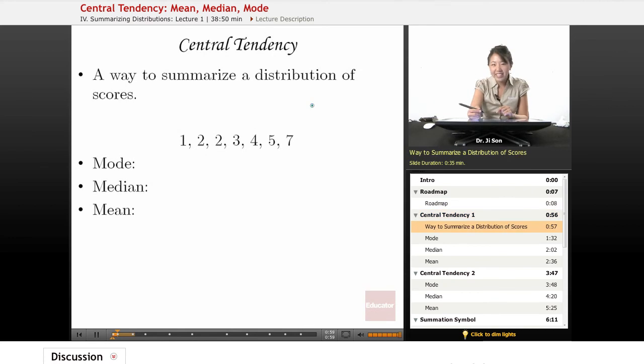Central tendency - basically the idea is we want to be able to summarize a distribution. And we've learned about some different ways you could summarize it, like the shape, for example. You could say it's a uniform shape. It's a nice way to summarize a distribution.